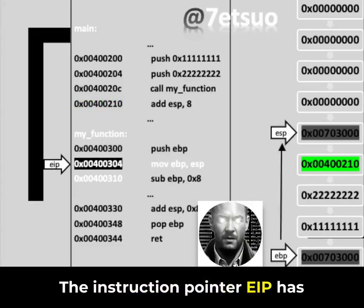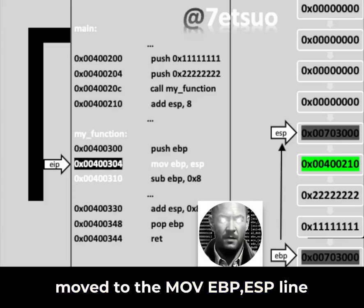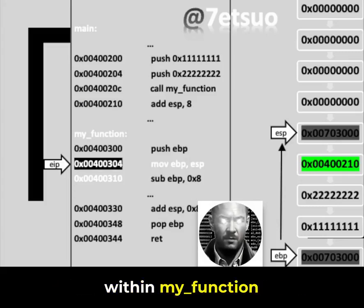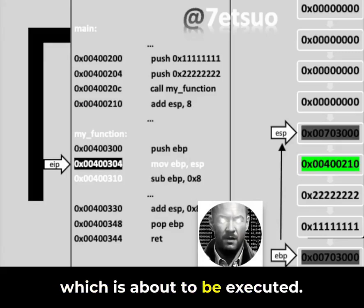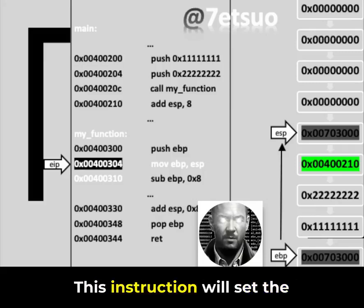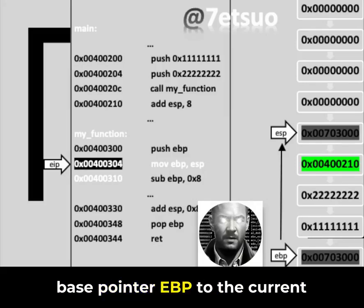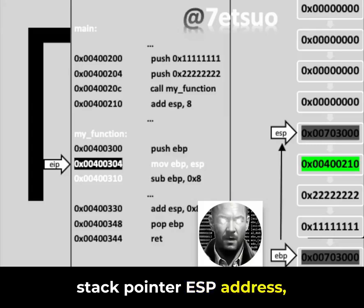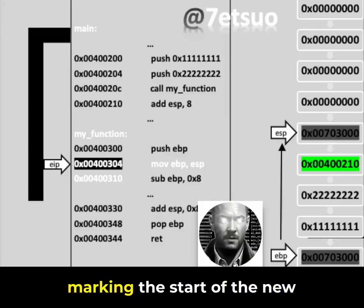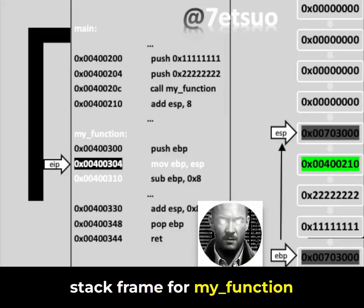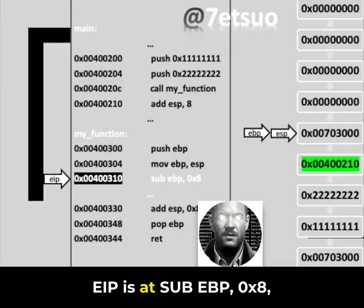EIP has moved to the move EBP, ESP line within my_function, which is about to be executed. This instruction will set the base pointer, EBP, to the current stack pointer ESP address, marking the start of the new stack frame for my_function.